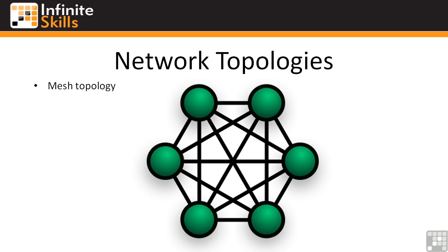A partial mesh is basically where every node is not connected to every other node. For example, a satellite office may only need connectivity back to the corporate office, whereas all the other branches need full access to everyone else. So that satellite node may not be fully meshed with all the rest — it may only have a connection back to the central office. That's a partial mesh topology.